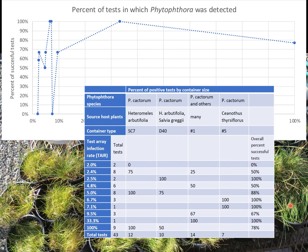That data is summarized here. We can look at the test array infection rate — the TAIR — which is the percent of pots being irrigated that have a Phytophthora source plant in them, and how many of the tests were successful. We have different replications at different infection levels with a number of different success rates.